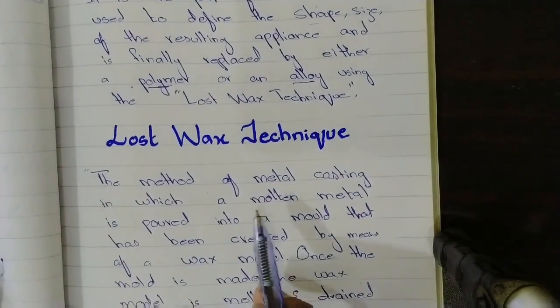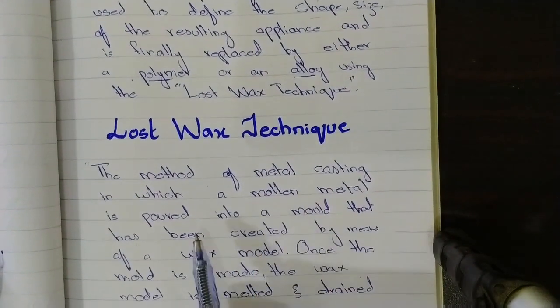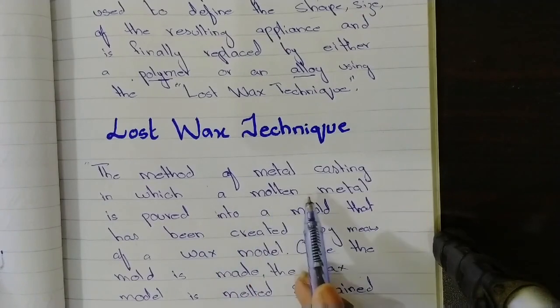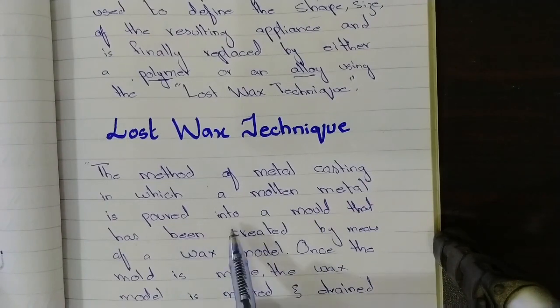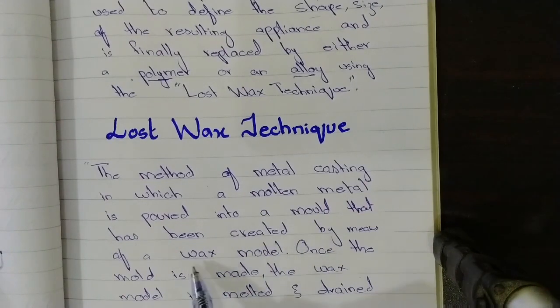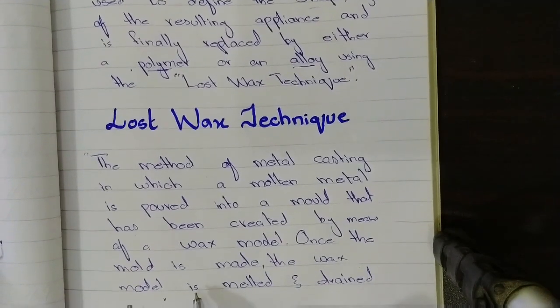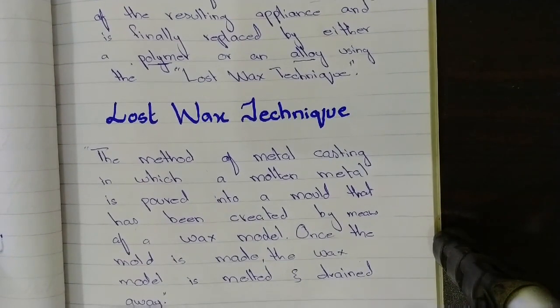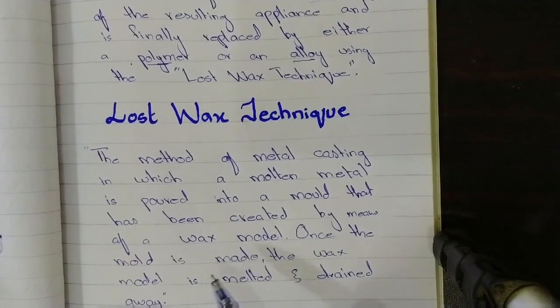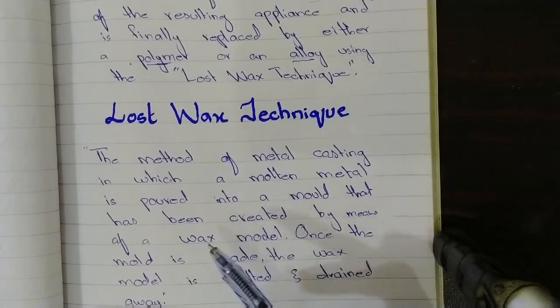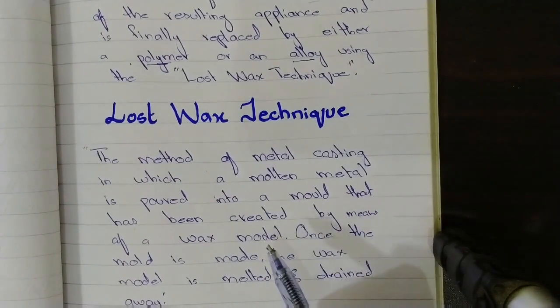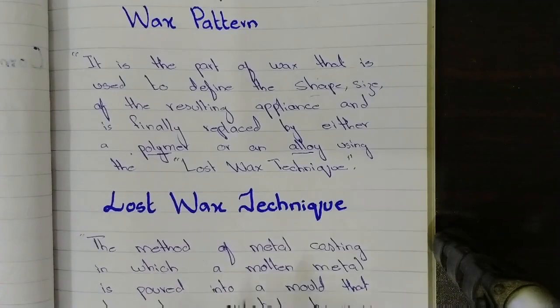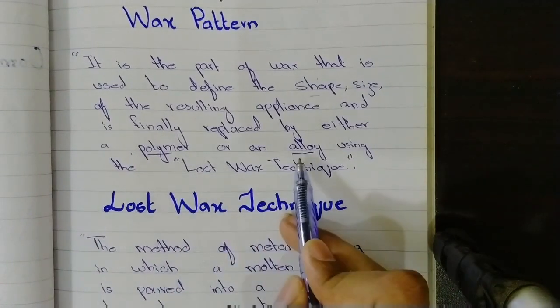Now what is lost wax technique? Lost wax technique is the method of metal casting in which a molten metal is poured into a mold that has been created by means of a wax model. Once the mold is made, the wax is melted and drained away. So it is basically the technique through which we can burn out the wax from our mold and then we can replace it with polymer or an alloy.